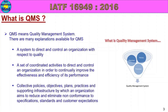Collective policies, objectives, plans, practices and supporting infrastructure by which an organization aims to reduce and eliminate non-conformances to specifications, standards and customer expectations. So, one company's procedures, objectives, policies, plans, practices and infrastructure are all prepared and organized. That will follow up specifications, standards and customer expectations. This will avoid one non-conformity. Use quality management system. This is the definition of quality management system.